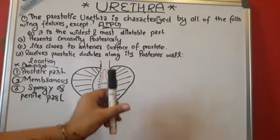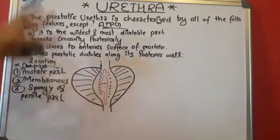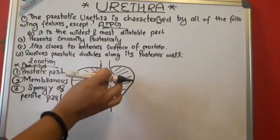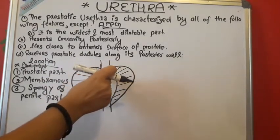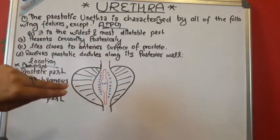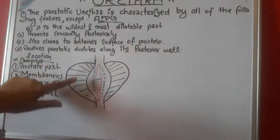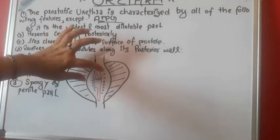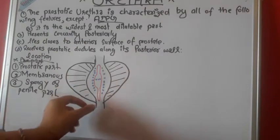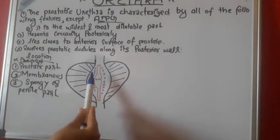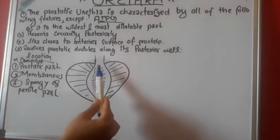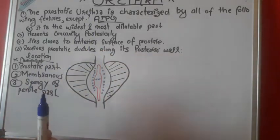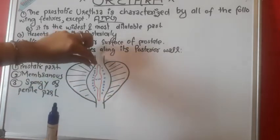In the prostatic part, the urethra is almost like a tube. In the posterior part, there is a slight elevation or mucosal fold. As you can see in this picture, inside the prostate gland, the urethra bulges out slightly, and in the middle of the urethra there is a median mucosal fold that elevates a little bit.